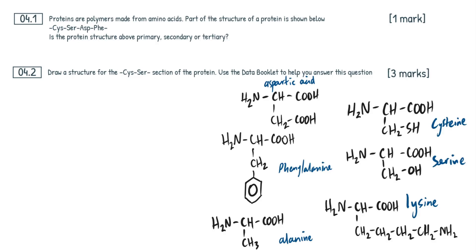In this video we're going to go through some past paper questions on amino acids and proteins. This has been requested a few times. It's from Paper 2, June 2022, AQA A-level Chemistry. I can't show the actual paper on screen because of AQA copyright, but I've rewritten it out and drawn in the amino acid insert. Feel free to pause the video, attempt the question yourself, learn from your mistakes. So, question 4.1, let's jump into this.